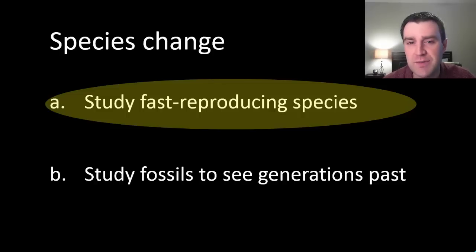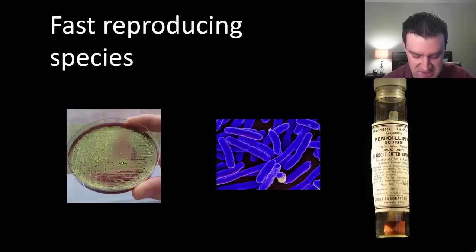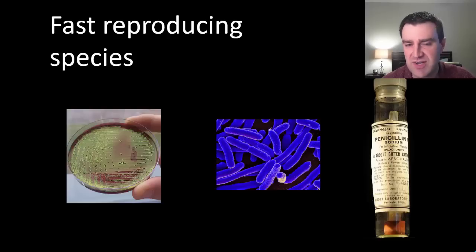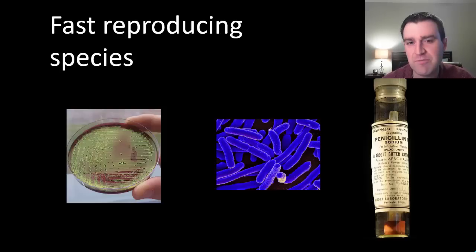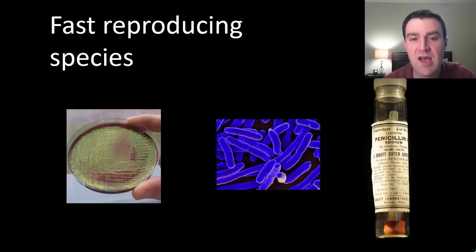What is a really fast-reproducing species that we could actually show changing? A wonderful example would generally be bacterial species. There are many species of bacteria, but in particular I want to address some of the species that cause disease — bacteria that get into us and make their living by making us sick so they can spread from human host to human host.